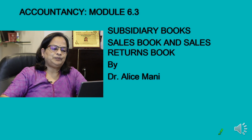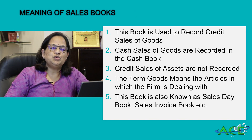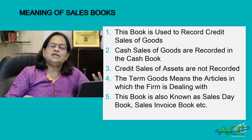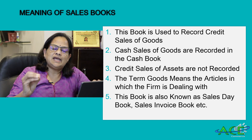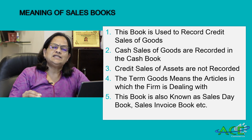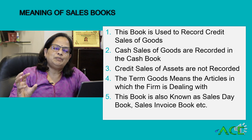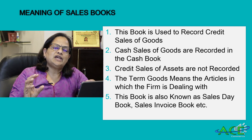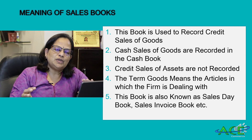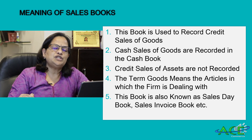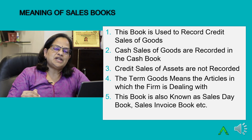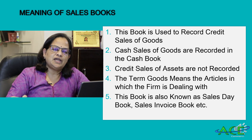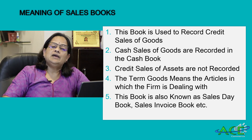The sales book records credit sales of goods. Cash sales go to the cash book, which is maintained separately as one of the subsidiary books. Cash transactions and cash sales are recorded in the cash book, whereas credit sales of goods are recorded in the sales book.